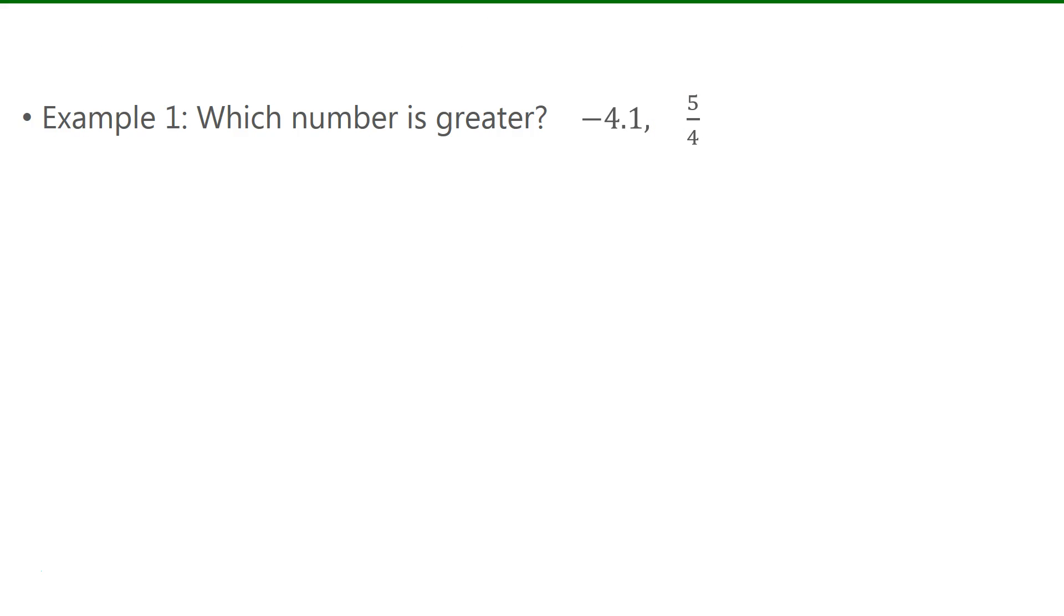Now the first example asks us to determine which number is greater. So we see that one is negative and one is positive. I'm going to choose the positive number there, since positive numbers are further to the right on the number line, so they are always greater than negative numbers. We don't need to do a number line for this one. We just know that.